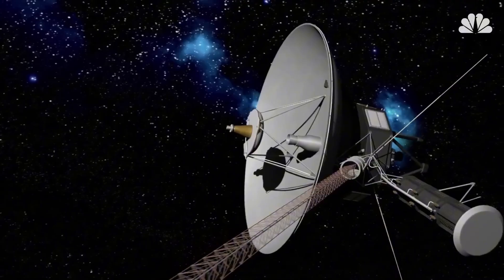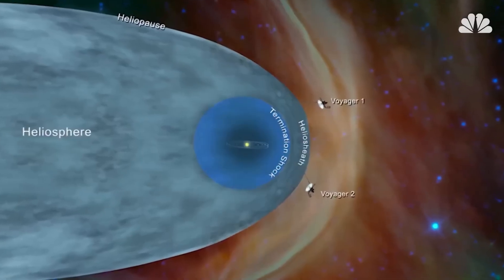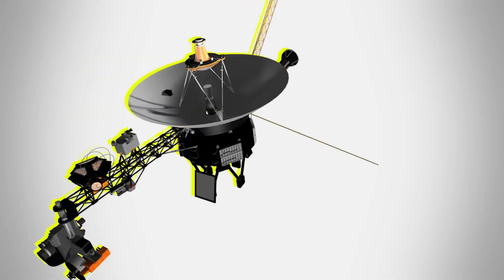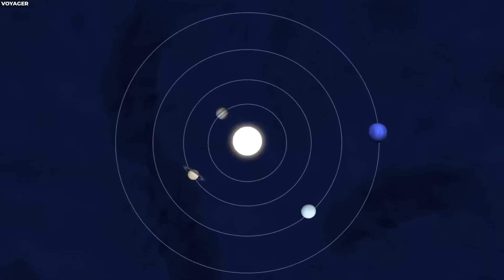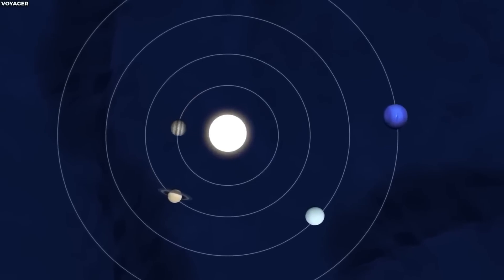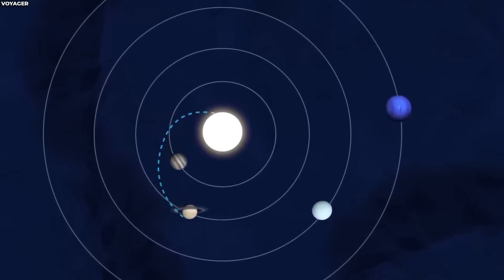Not only did NASA use the spacecraft to discover the massive storm on Jupiter and the rings around Saturn shortly after its official launch, but more recently NASA has alerted the world to a strange and seemingly impossible discovery from Voyager 1 that has left scientists both confused and worried.